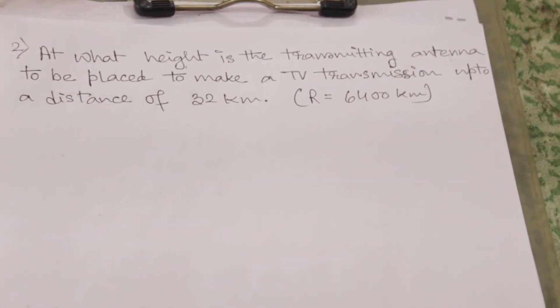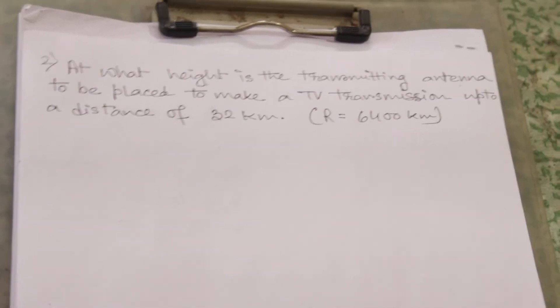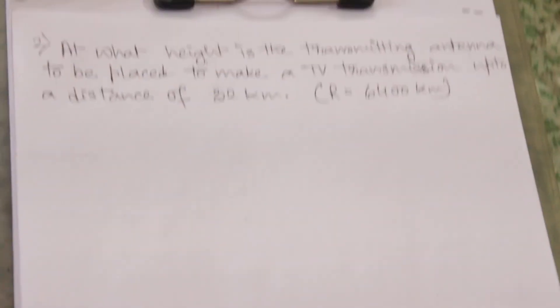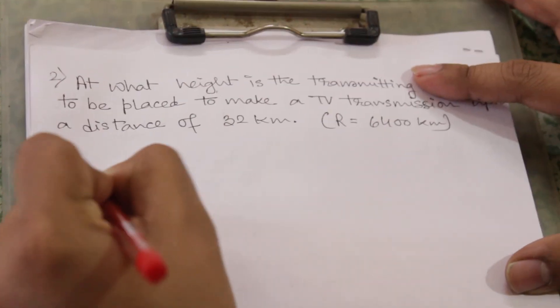At what height is the transmitting antenna to be placed to make a TV transmission up to a distance of 32 kilometers? Again, you can see only one height is given, so the formula will be D equal to root over 2Rh.